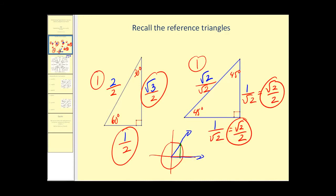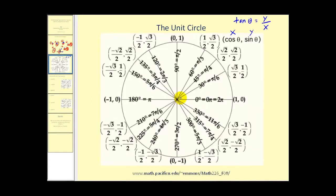Let's take a look at the unit circle. We can see the labels of the most common angles in standard position. The radius r is equal to one, which tells us the x-coordinate is equal to cosine theta, the y-coordinate is equal to sine theta, and tangent theta equals y over x.